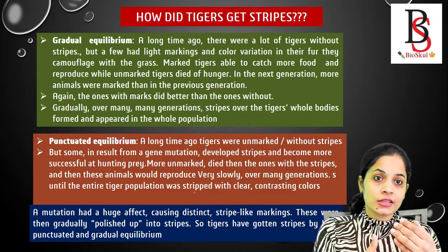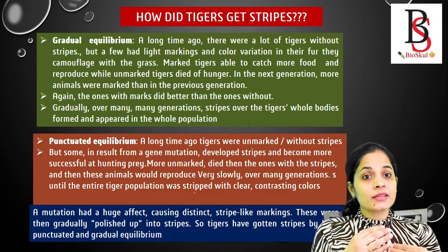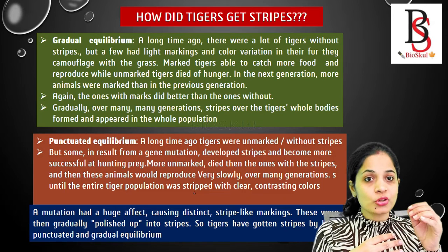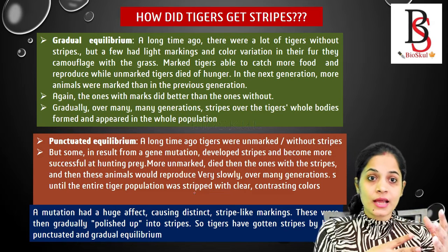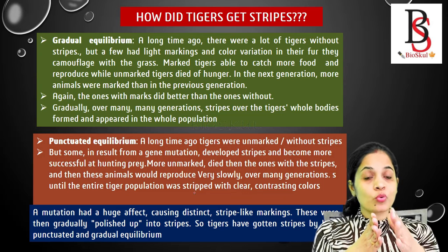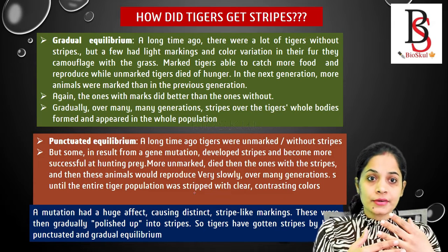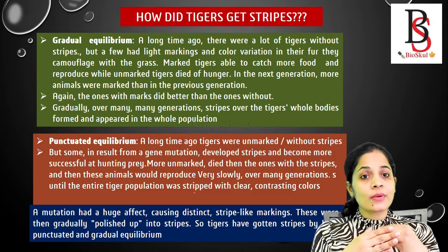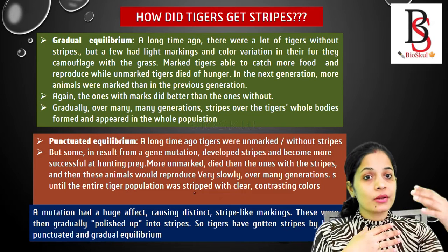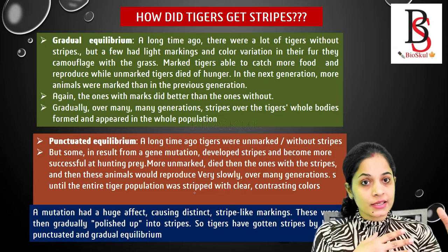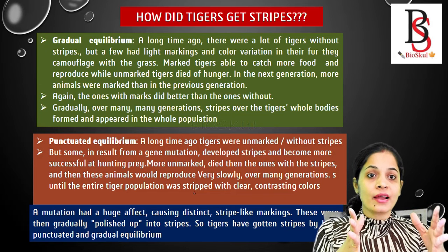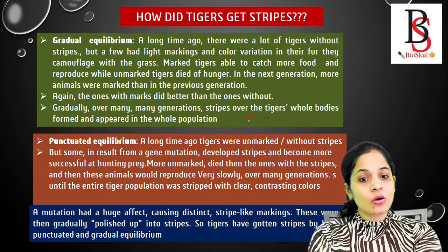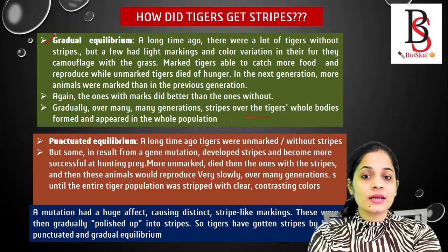In the next generation, more tigers had marks or stripes on their bodies, and those with more prominent stripes had a higher survival rate. Through gradual accumulation of changes over many generations, we finally find tigers with stripes over their whole bodies. This is gradual equilibrium.